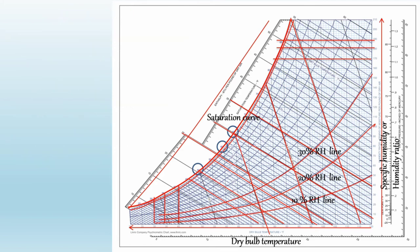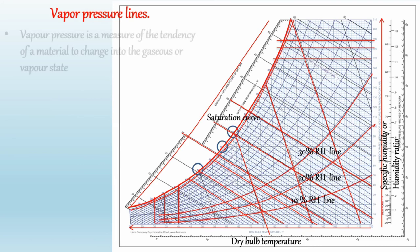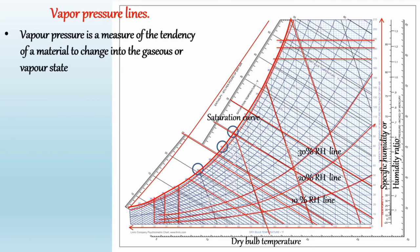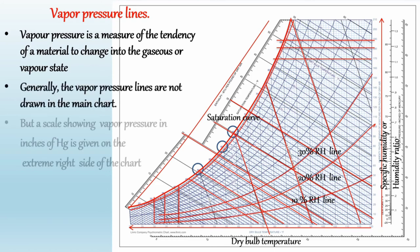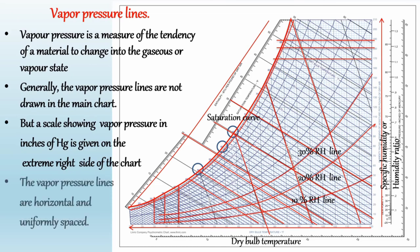The next line is the vapor pressure line. Vapor pressure is a measure of the tendency of a material to change into the gaseous or vapor state. In the psychometric chart, generally the vapor pressure lines are not drawn, but a scale showing vapor pressure in millimeters of mercury is given on the extreme left side of the chart. The vapor pressure lines are horizontal and uniformly spaced.